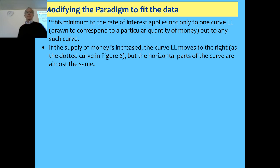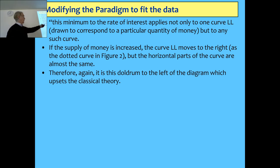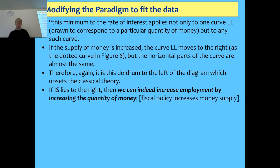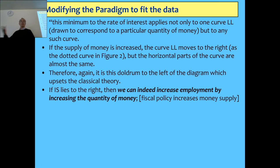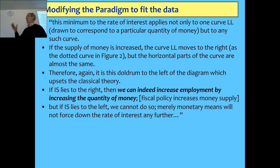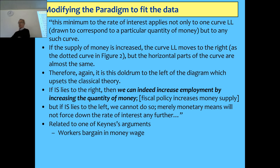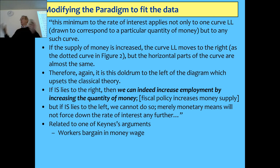Hicks said it's the flat region — the doldrum to the left of the diagram — that upsets the classical theory. If you're in that area where the LM curve is flat, then changing the price of labour won't have much impact on demand for labour. If you're in that area, increasing the amount of money in circulation — which the government can do by running a deficit — can drive up demand and employment without causing interest rates to rise. But on the steep side, you can't force interest rates down any further. So Hicks said this creates a role for government policy: if the government can shift the IS curve from where the LM curve is flat toward where it goes vertical, you can boost employment and solve something like the Great Depression.